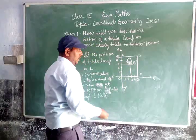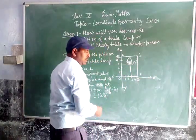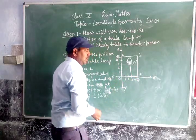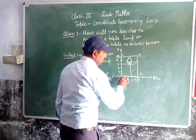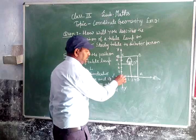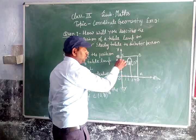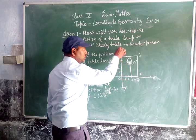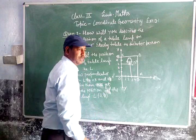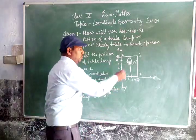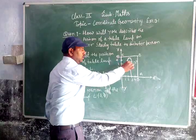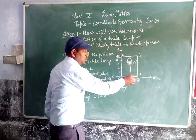We can draw a point on the x-axis. Suppose one, two, three, four, five in the direction of positive x, and one, two, three, four, five in the direction of the y-axis. Suppose L is the position of the lamp. Draw a perpendicular from L to OX.